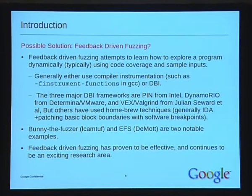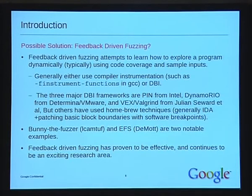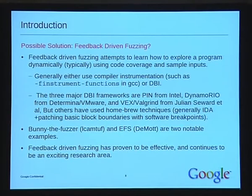Some notable examples of feedback-driven fuzzing: Bunny the Fuzzer by Michal Zalewski used finstrument-functions from GCC, and EFS from deMott — an evolutionary fuzzing system. He used basic hill climbing and feedback to try and improve fuzz coverage. This has proven to be pretty effective and it's exciting to be able to design this into a fuzzer and see what kind of results we can get.